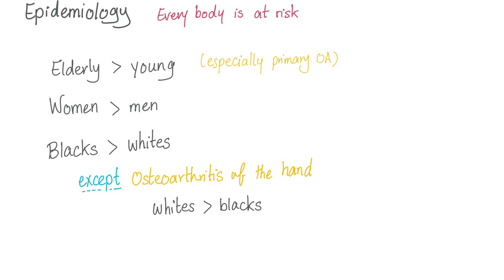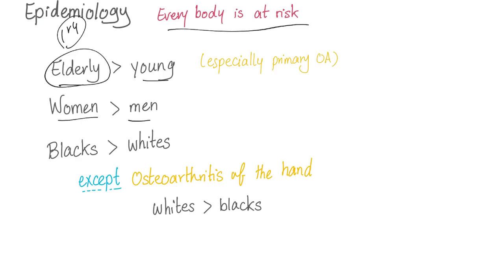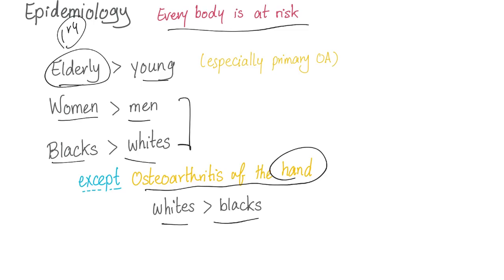Epidemiology: everybody is at risk, but some more than others. Osteoarthritis is more common in the elderly than the young, more common in women than men, and more common in blacks than whites — though the reason is not clearly known. An exception: osteoarthritis of the hand is more common in whites than blacks.